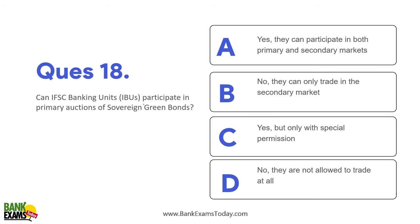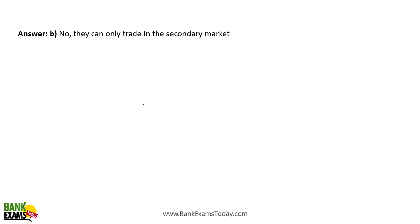Can IFSC banking units participate in the primary auction of sovereign green bonds? No, they cannot. However, they can trade in the secondary market — participation in the primary market is not allowed, but secondary market trading is permitted.